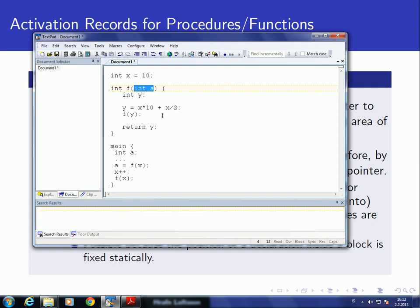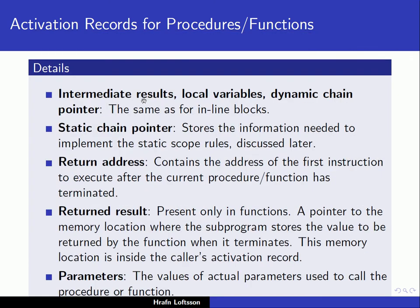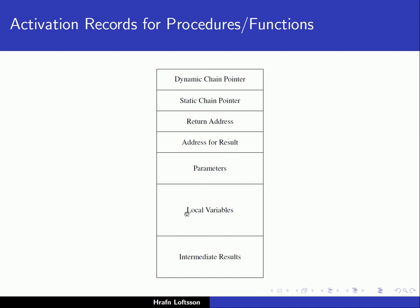This is possible because the position of a declaration inside a procedure or function is fixed statically. Inside a function like f, if we have int y and int z, then y will be first in memory for the local variables and z will be next. So for the activation record for f, y is the very first two bytes and z is the next two bytes. The compiler, if it has a pointer to a fixed area in the activation record, can access variables using an offset from this pointer.